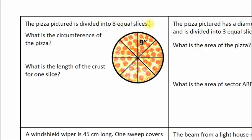The pizza pictured is divided into eight equal slices. What is the circumference of the pizza? Well, we can see that this measure must be the radius of this pizza, nine inches, and we know that circumference is equal to 2πr, which is equal to 2π times 9. We can multiply the 2 and the 9 together because those are like terms. Don't forget the pi, it doesn't disappear. So it's 18π, and since we're measuring in inches, this is going to be 18π inches around the entire pizza.